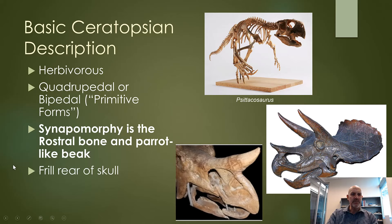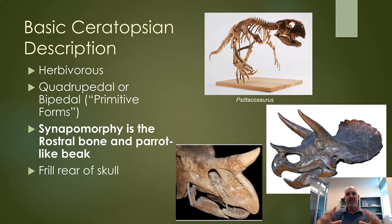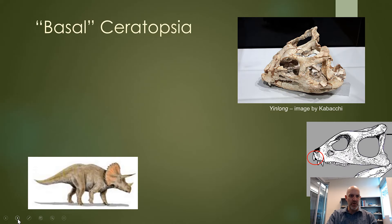Some basic descriptions of ceratopsians: they're all herbivores, as are all ornithischians. Remember, all ornithischian dinosaurs are herbivores, not meat eaters. The synapomorphy you need to know for this group is the rostral bone — it's a bone you haven't seen before, very particular to ceratopsians. Most of them also have a frill on the rear of the skull, but the key synapomorphy is the rostral bone.